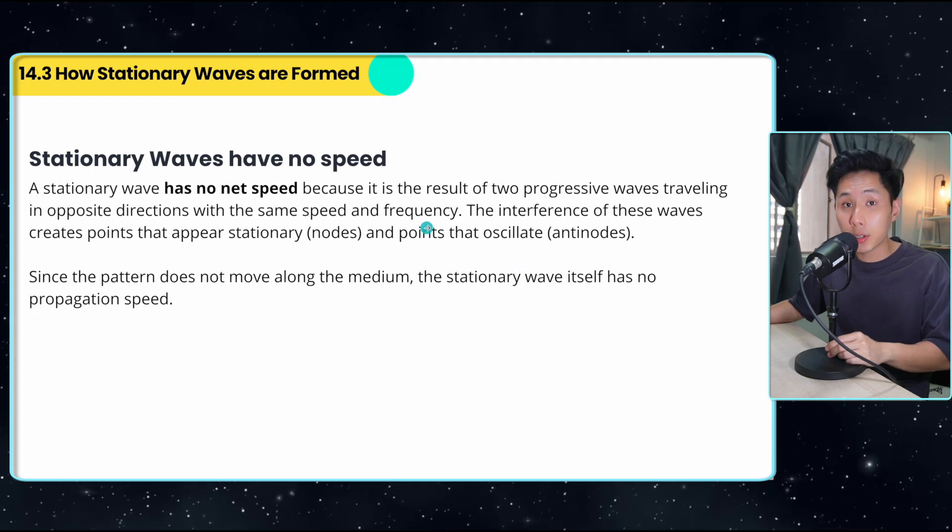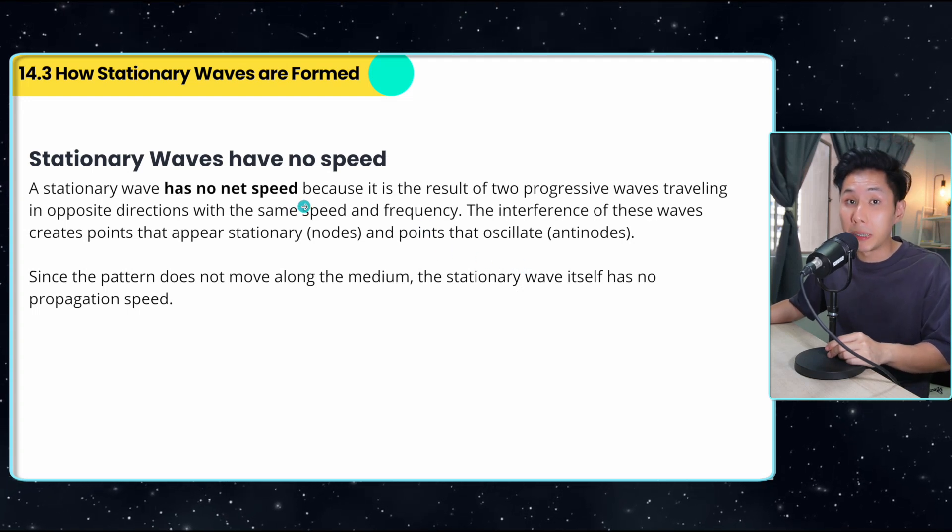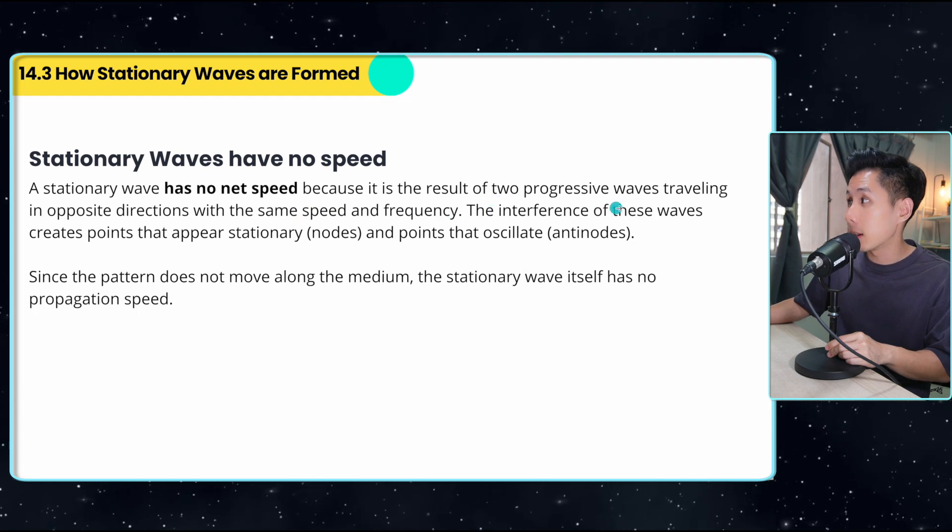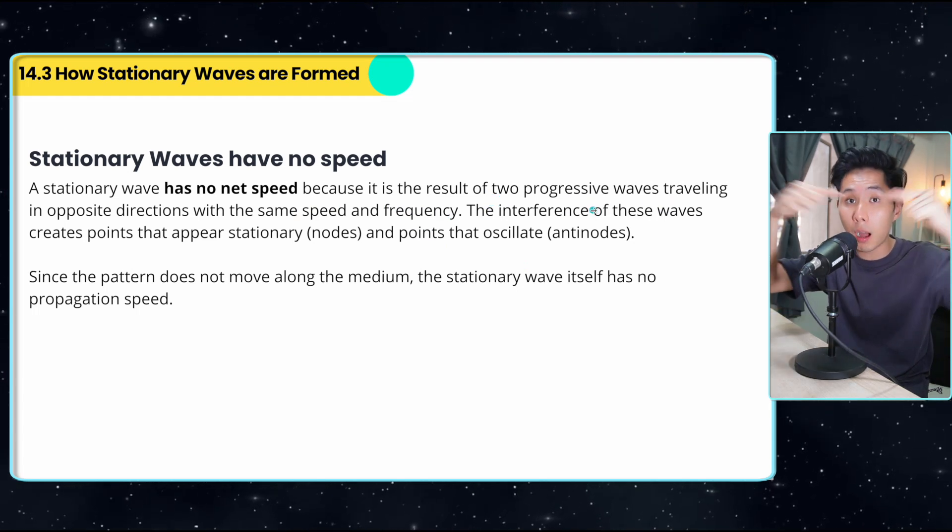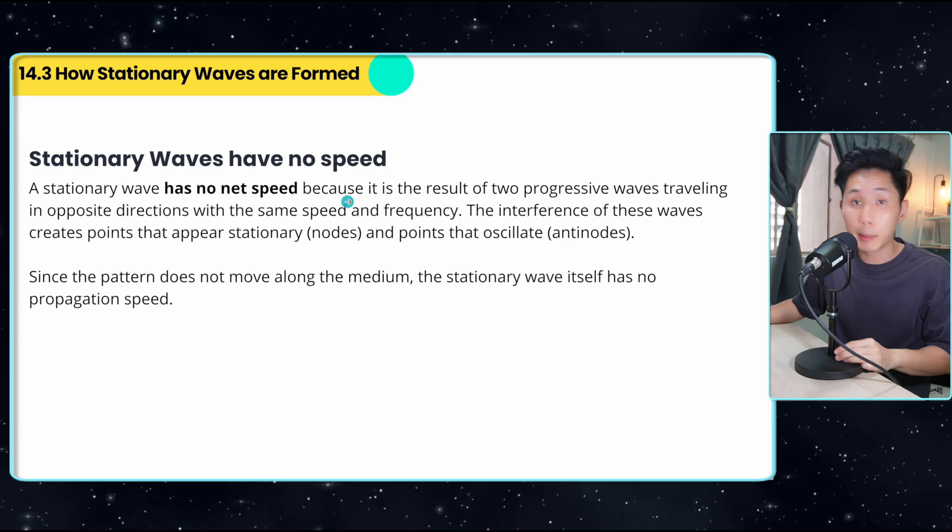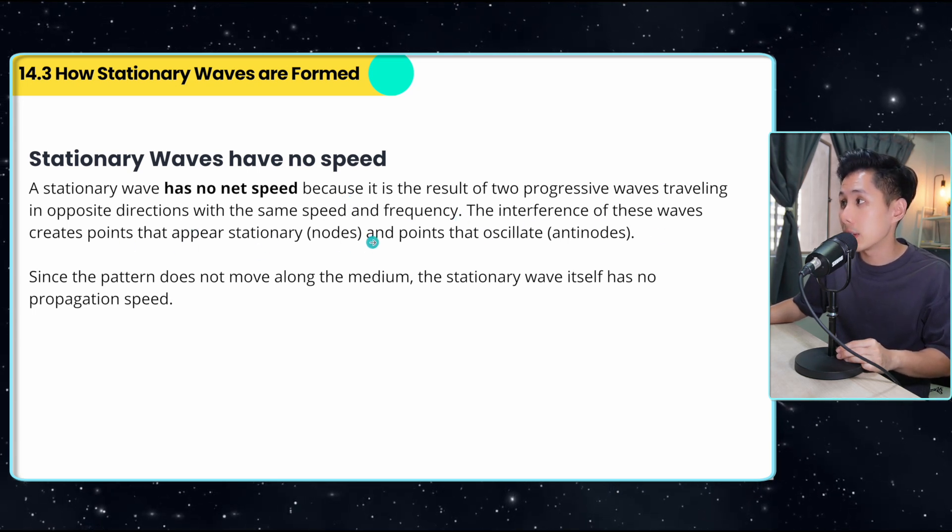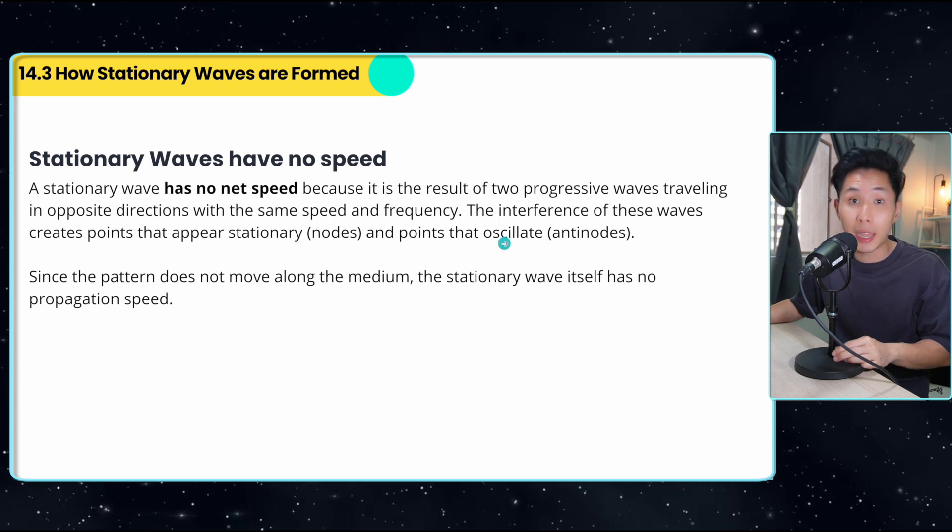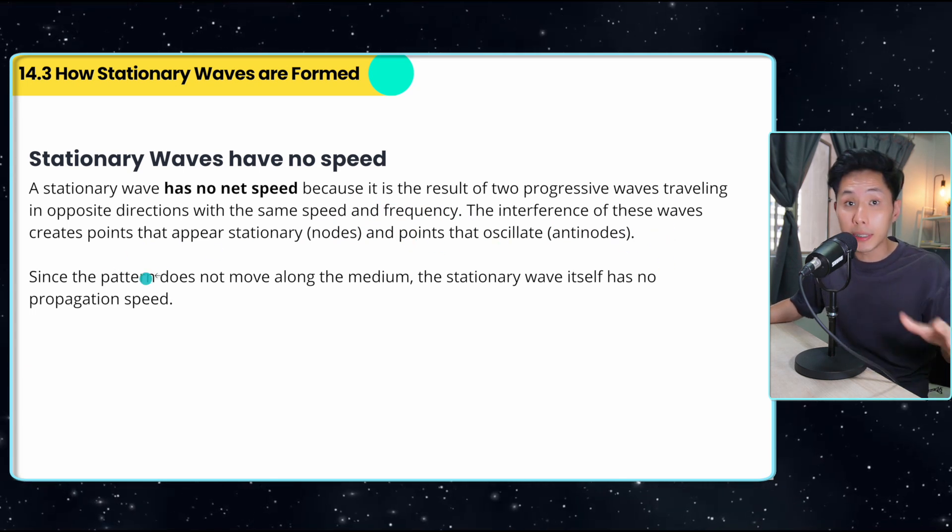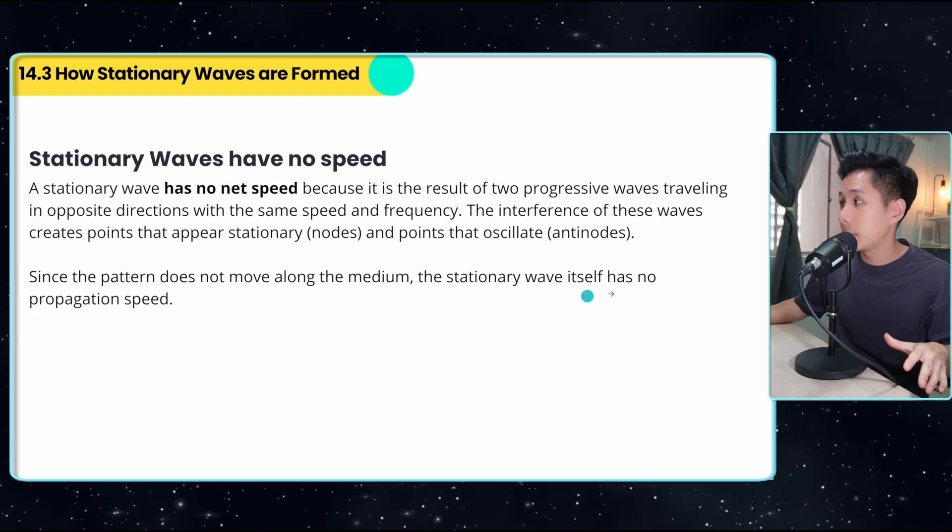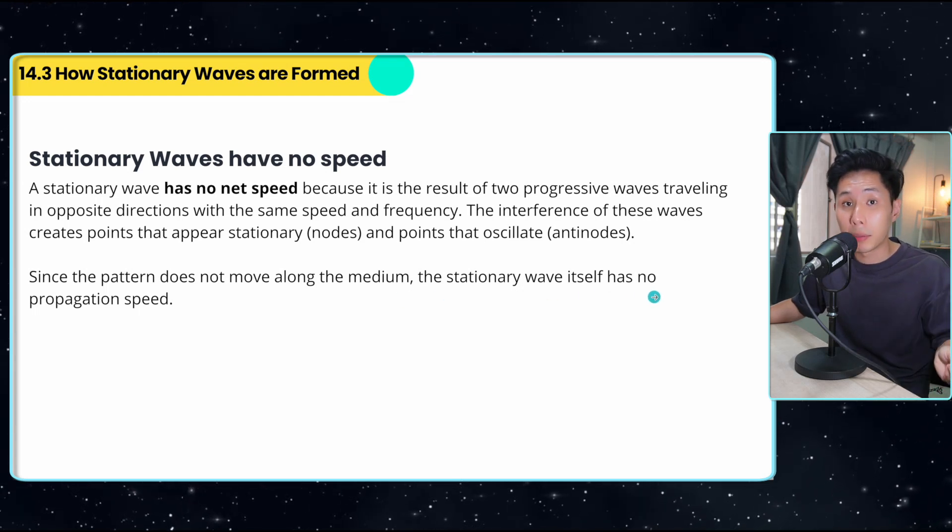But for stationary wave, it actually has no speed because there's no energy transfer. It is the result of two progressive waves traveling in opposite direction with the same speed and frequency. And the interference creates points that appear stationary, which is the node, and points that oscillate, which is antinodes. But since the pattern does not move along the medium, the stationary wave itself has no propagation speed.